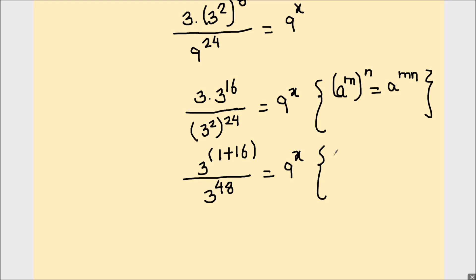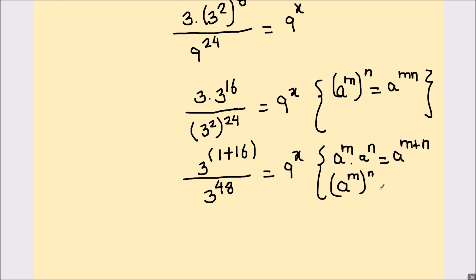Here we have used the exponent rule: a raised to power m times a raised to power n equals a raised to power m plus n, so the powers get added. In the numerator we used a raised to power m whole raised to power n equals a raised to power mn.